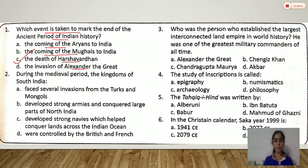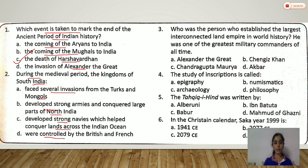Second question: during the medieval period, the kingdoms of South India — options are: faced several invasions from Turks and Mongols, developed strong armies and conquered large parts of North India, developed strong navies which helped conquer lands across the Indian Ocean, or were controlled by the British and French. During that period, they developed strong navies which helped conquer lands across the Indian Ocean.